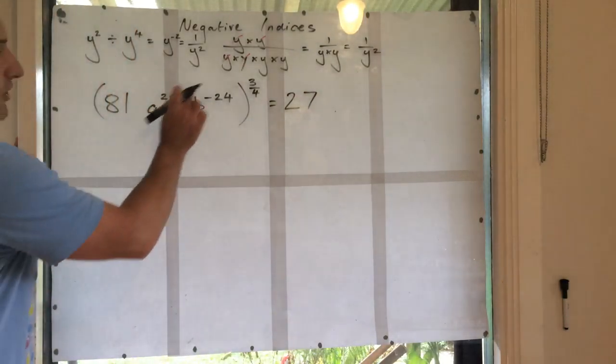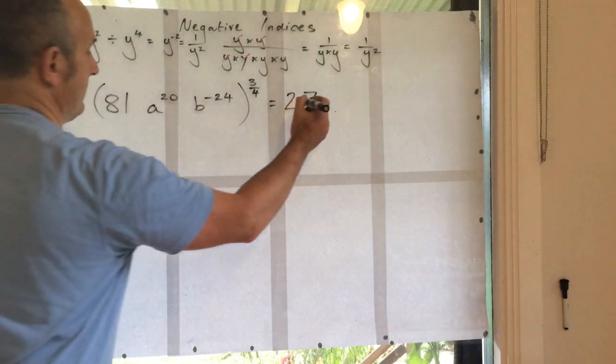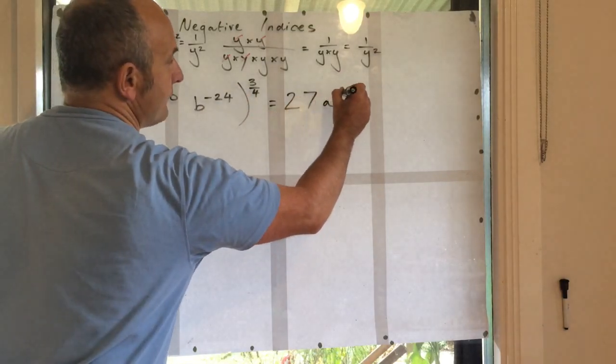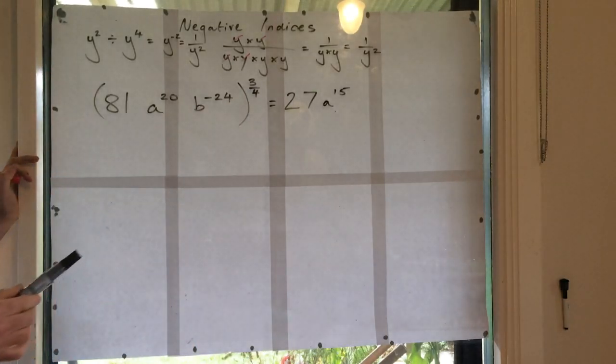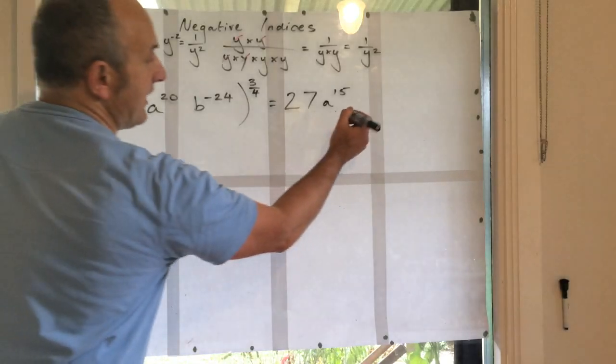What's 3 quarters of 20? a to the 15. What's 3 quarters of negative 24? 3 quarters of negative 24 is negative 18.